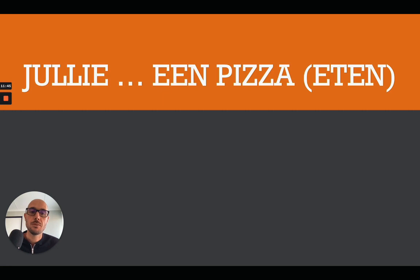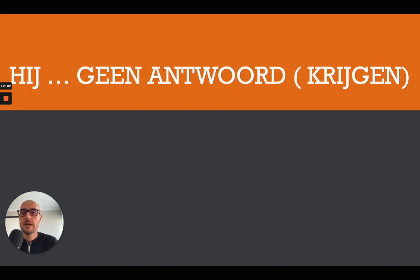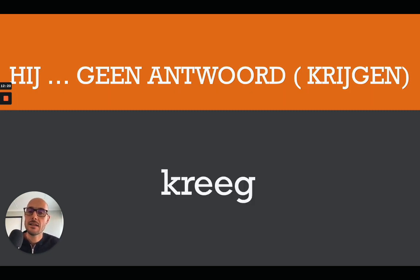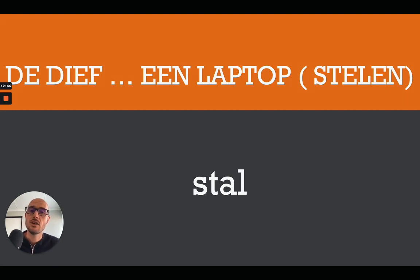Next: jullie [blank] een pizza, and the verb is eten — to eat, quite an important verb. How do you say you ate a pizza in Dutch? The correct answer is jullie aten een pizza. Then: hij [blank] geen antwoord, and the verb is krijgen — to get or to receive. He got no answer. The answer is hij kreeg geen antwoord. Finally: de dief [blank] een laptop, and the verb is stelen — to steal. The correct answer is de dief stal een laptop.